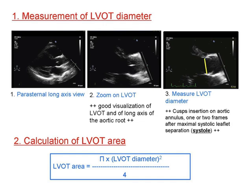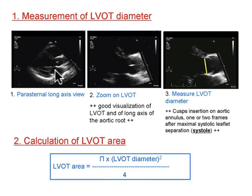To measure cardiac output, the first thing you do is measure the diameter of the left ventricular outflow tract. You can see that in the parasternal long axis. So the first thing you do is go back to parasternal long. That's the RV up here, the LV over here, the LA is here, the mitral valve is right here. The blood comes into the LV and gets pumped out through the aortic outflow tract.